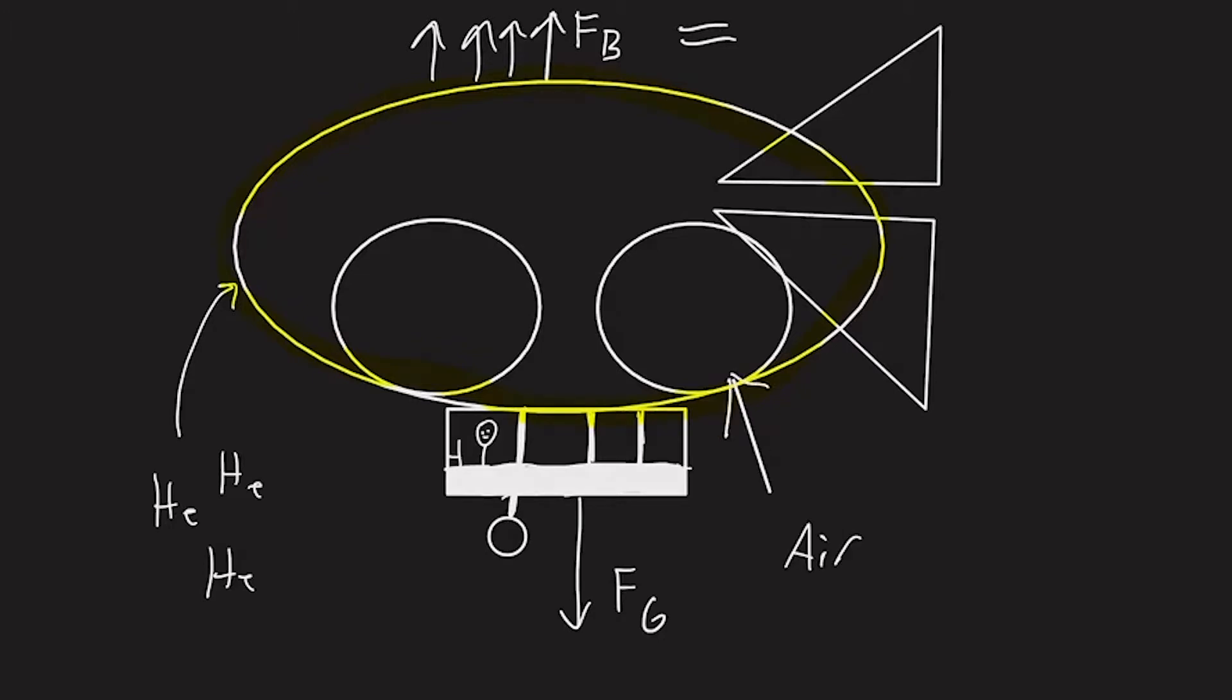Once airborne, air is pumped into the ballasts, which are inside the envelope, and the weight increases, causing the forces to reach equilibrium.